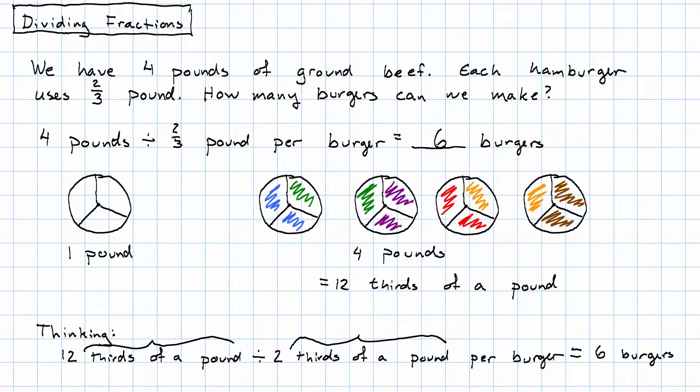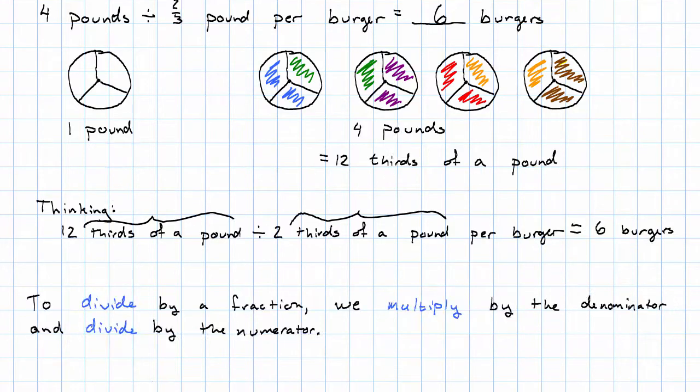What did we end up doing here? It looks like what we ended up doing was multiplying by the denominator and dividing by the numerator. To divide by a fraction, we multiply by the denominator and divide by the numerator.